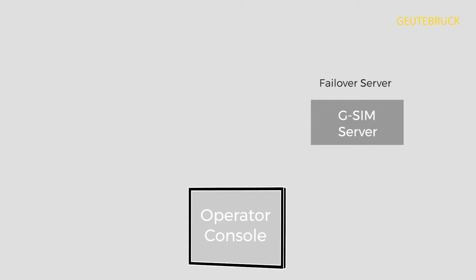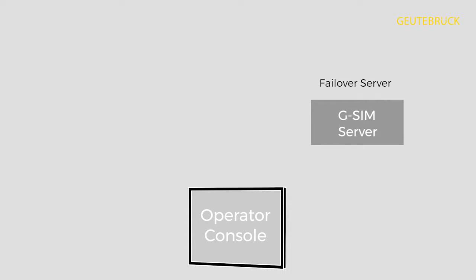Once the master server fails, the slave server takes over automatically and without any interruption. The user does not recognize this technical issue as the whole functionality remains available. Only the administrator receives an automatically generated message in order to start the repair or exchange process.